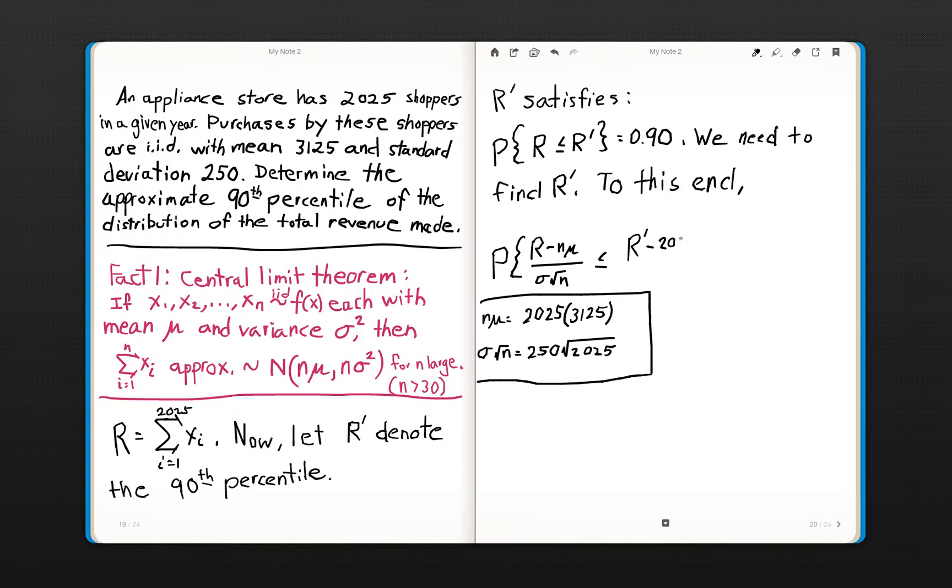This is 2,025 times 3,125 all divided by 250 times the square root of 2,025, and this is still equal to 0.90. Now, this piece that I've written up here implies that...